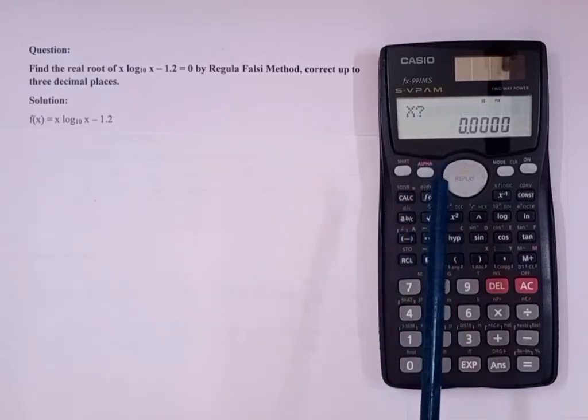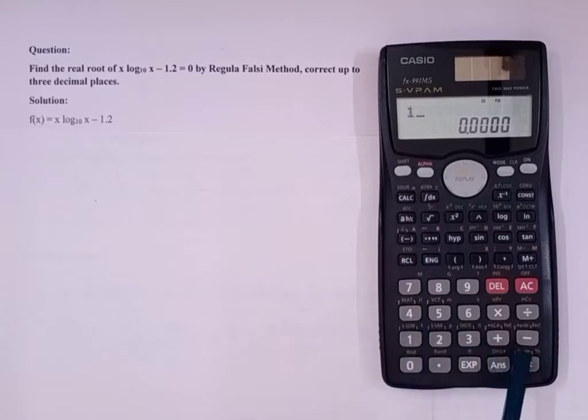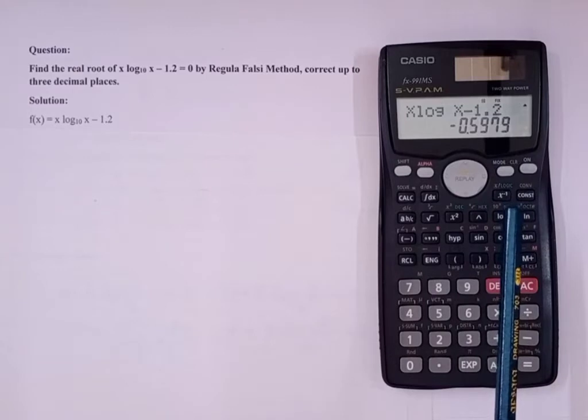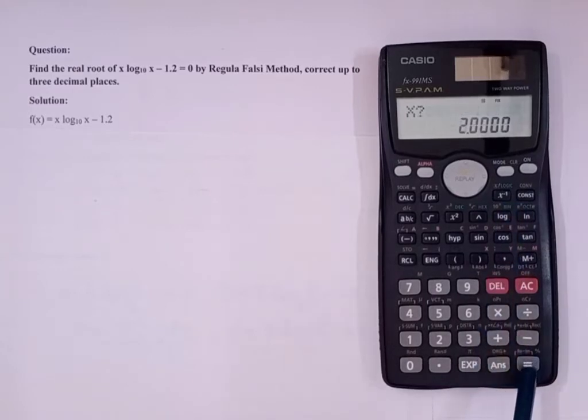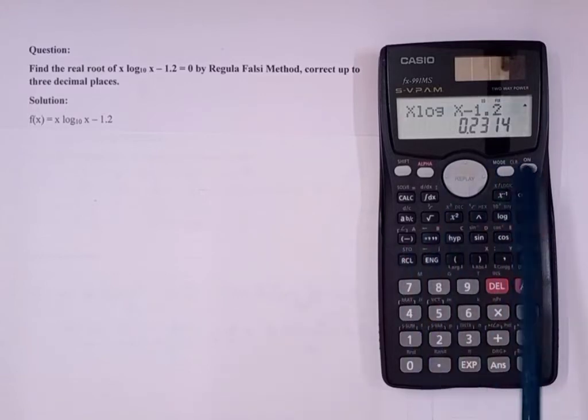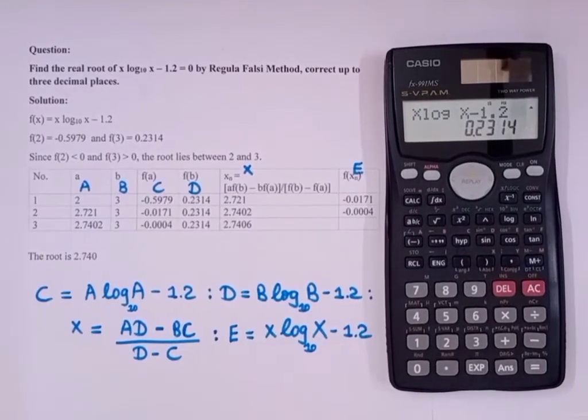It is asking the value of x. First, I'll try with 1. So I'm getting minus 1.2. Again, press equal. Now, let's try 2. So I'm again getting a negative value. Then I'll try it for 3. So I'm getting a positive value. That means the root will lie between 2 and 3, as f(2) is less than 0 and f(3) is greater than 0.